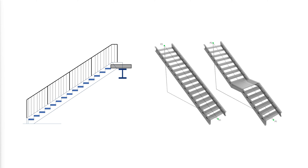Straight stairs are by far the most common type of stair. Although the term straight is self-explanatory, for purposes of classification, a straight stair is defined as one in which the stringers are straight members. The slope of straight stairs is typically less than 50 degrees.